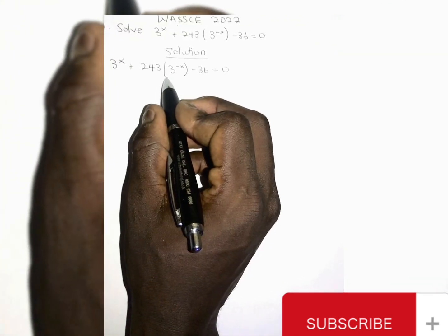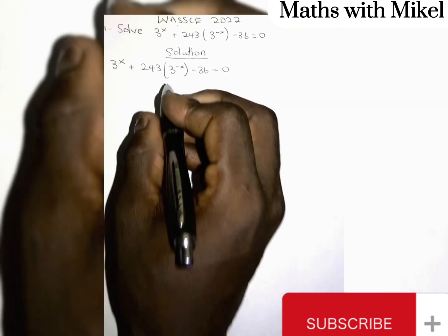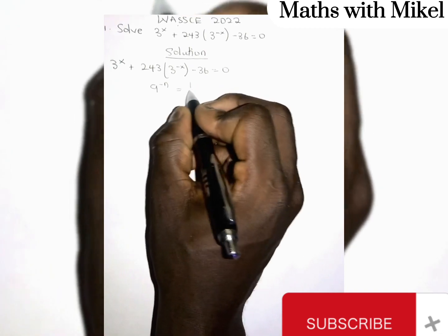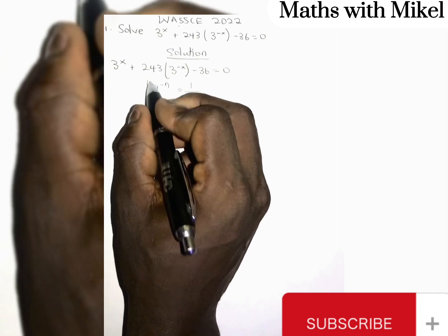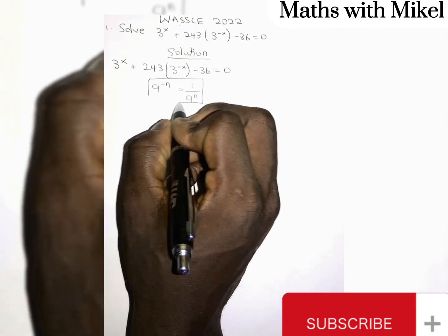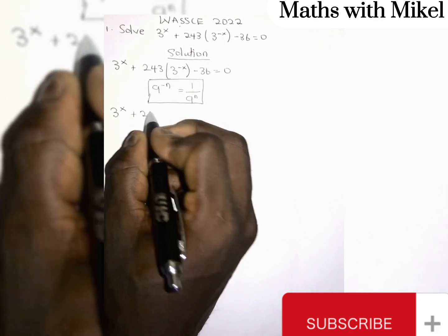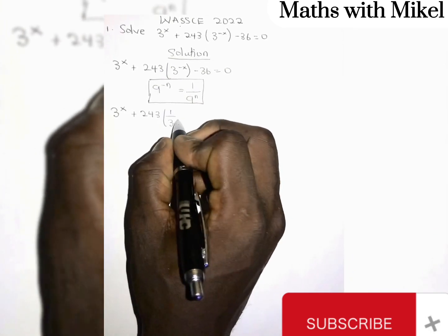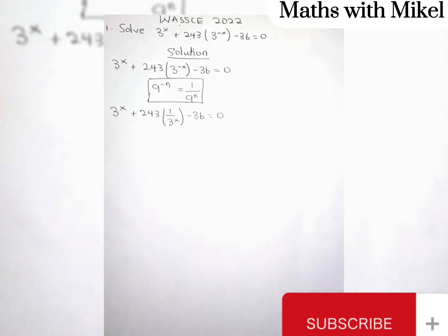Now, realize there's a little challenge here with 3 exponent negative s. But remember this property in indices: a exponent negative n is equal to 1 over a exponent n. So we are going to apply this property here. We get 3 exponent s plus 243 multiplied by 1 over 3 exponent s minus 36 is equal to 0.